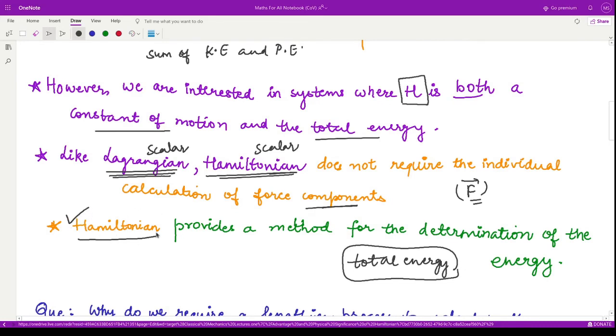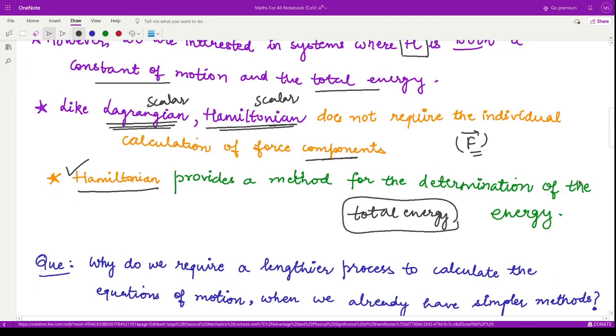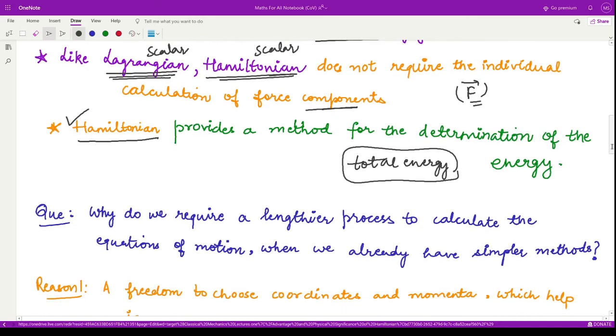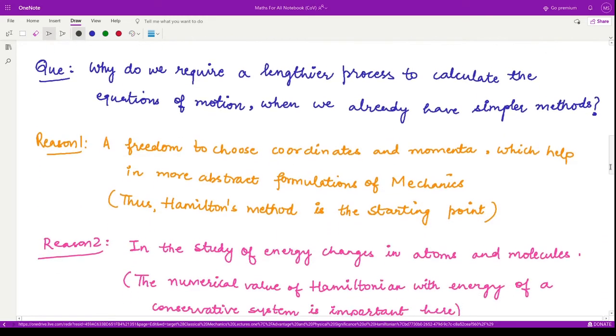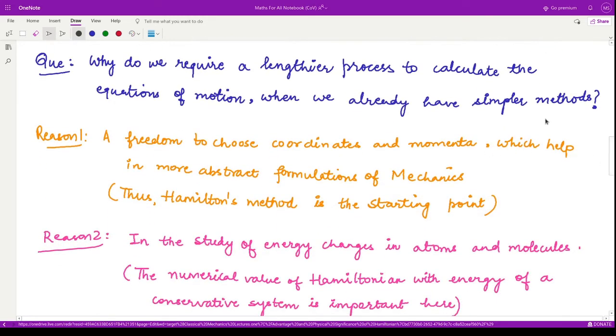In the last video I told you that calculating the equations of motion using the Hamilton's canonical equations or from the Lagrangian equations is quite a lengthier process compared to calculating them from Newton's equation. So why do we do so when we have simpler methods to calculate these equations of motion?